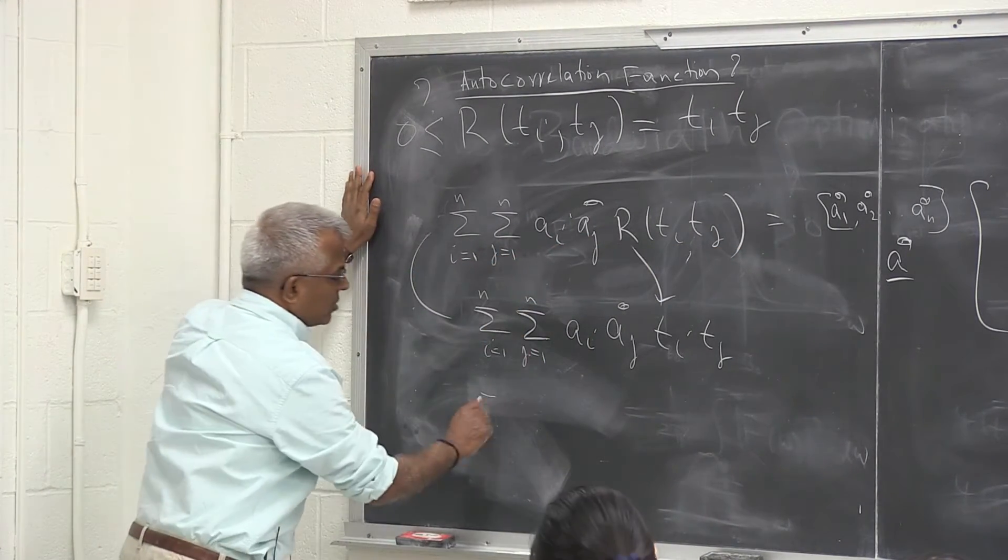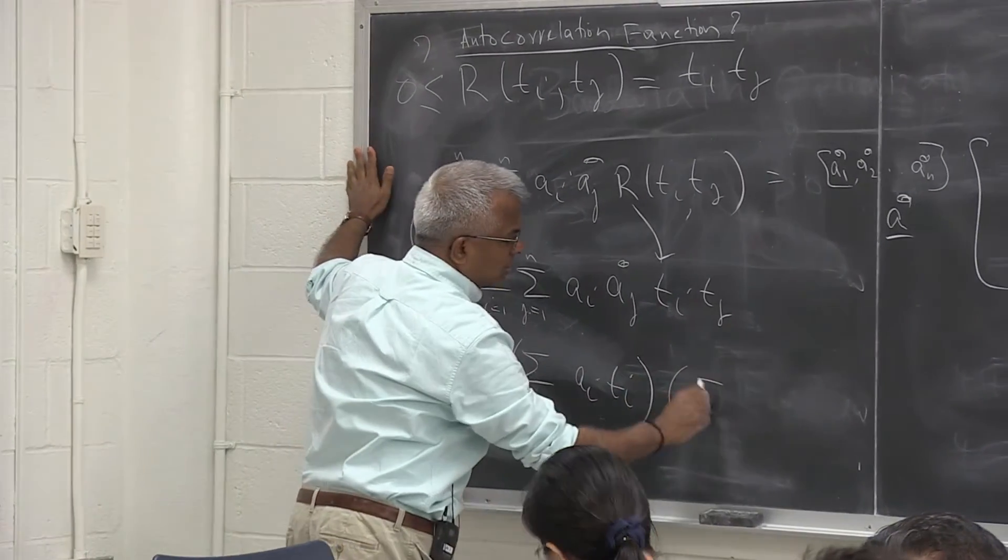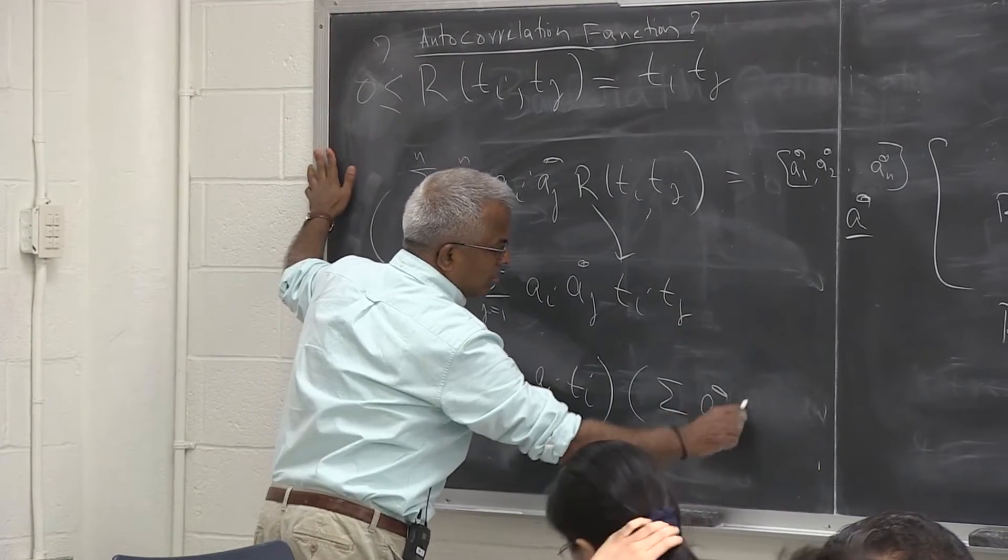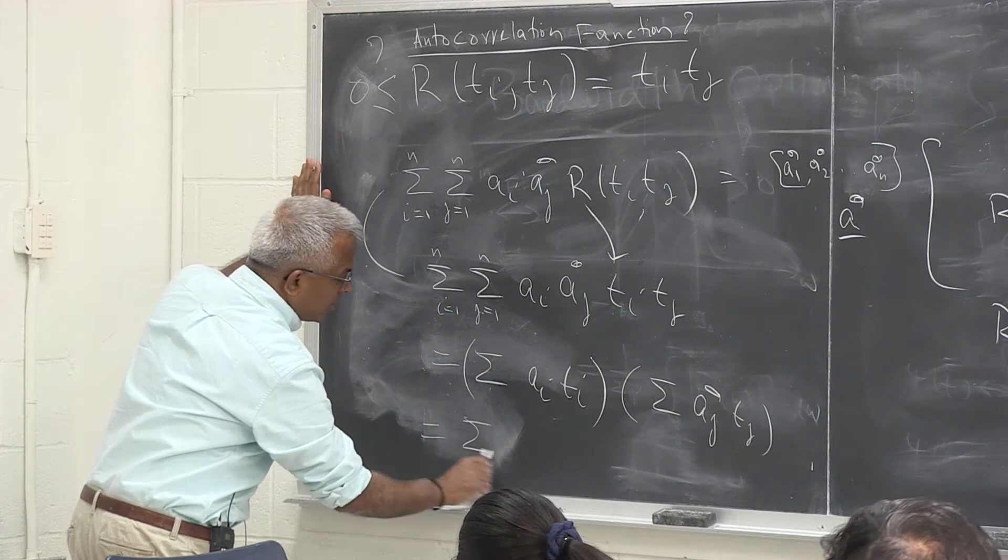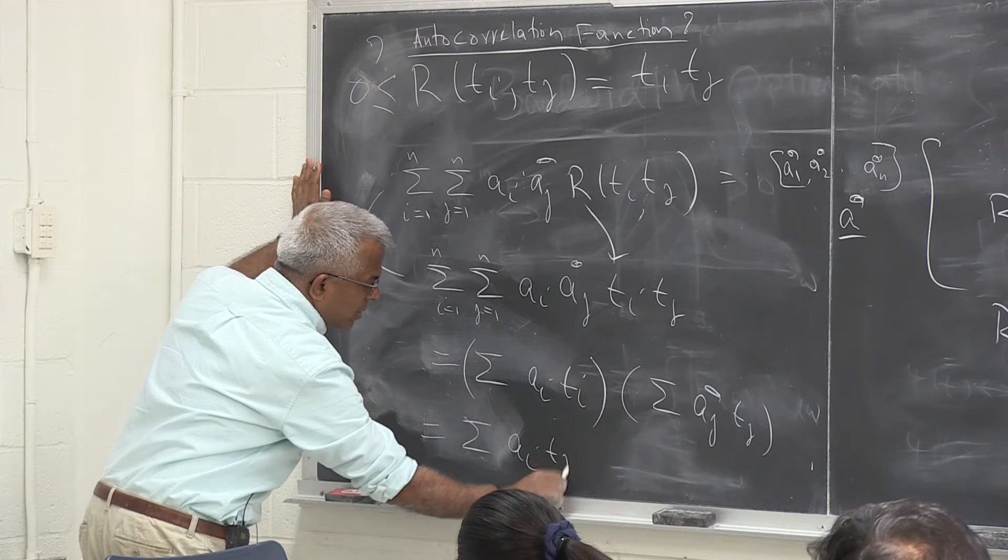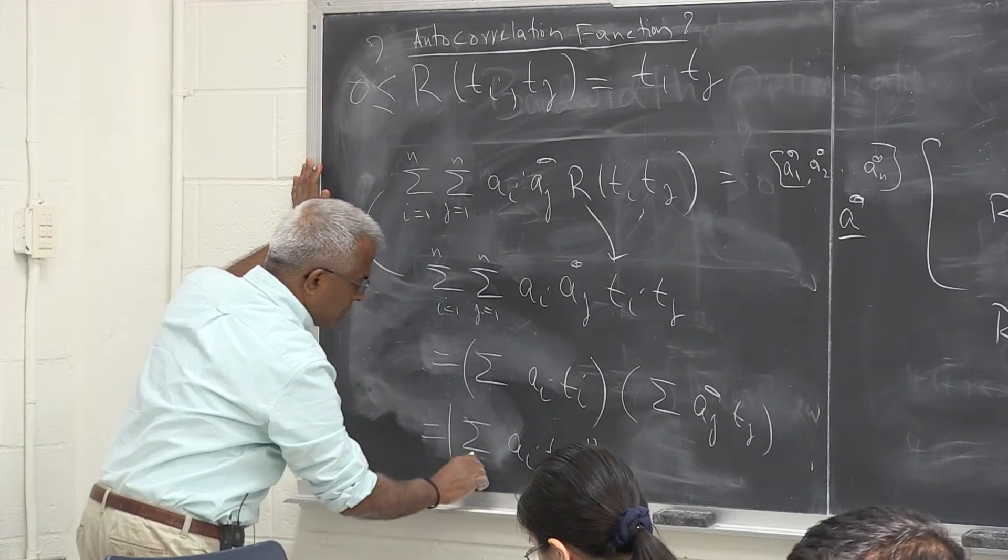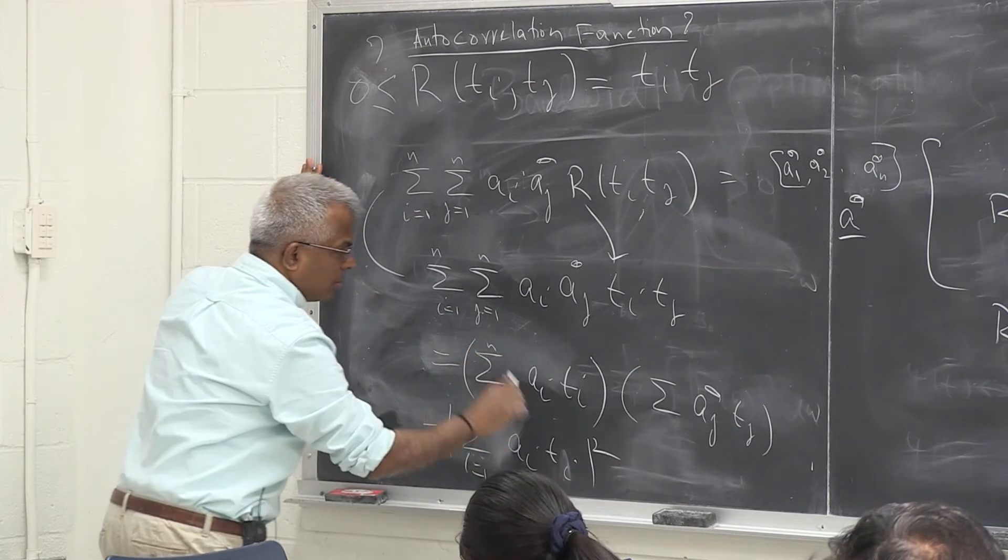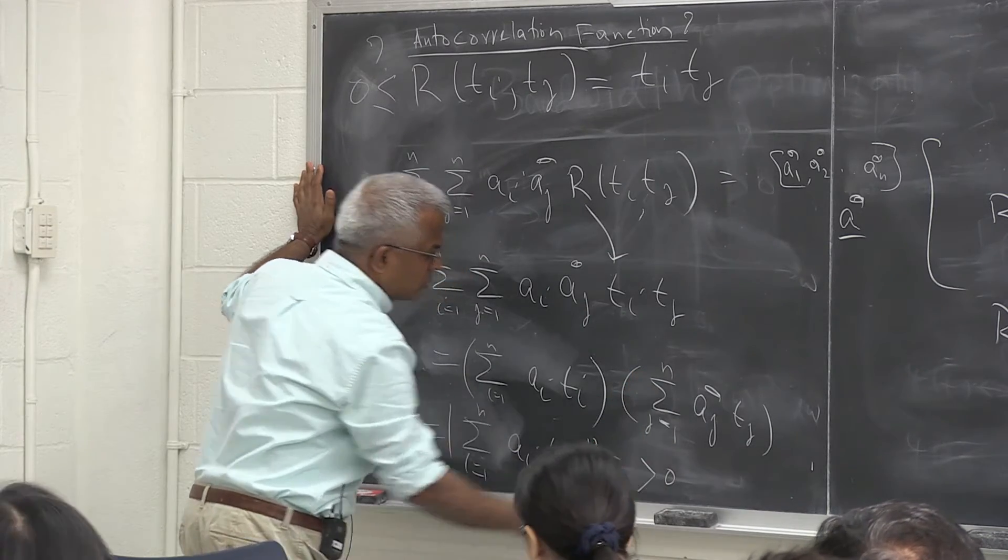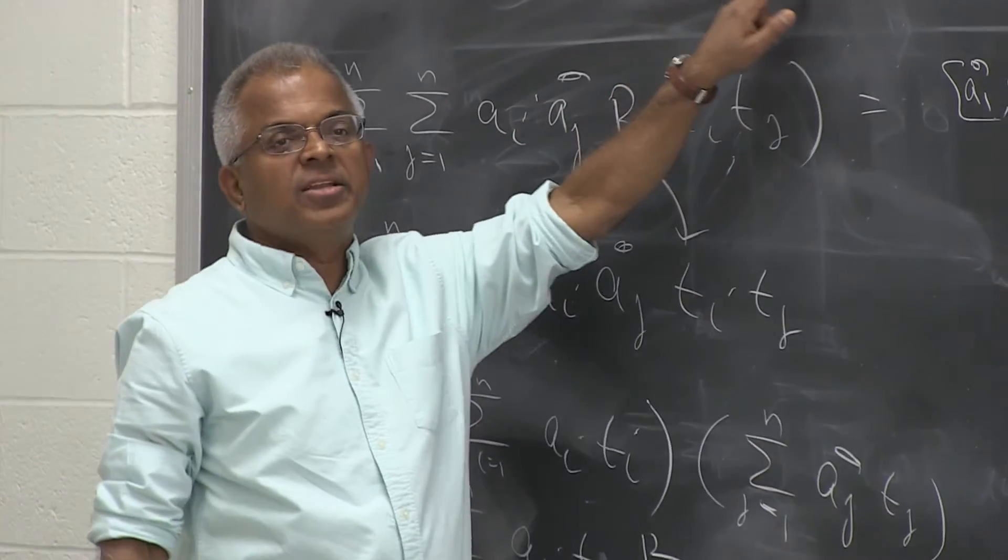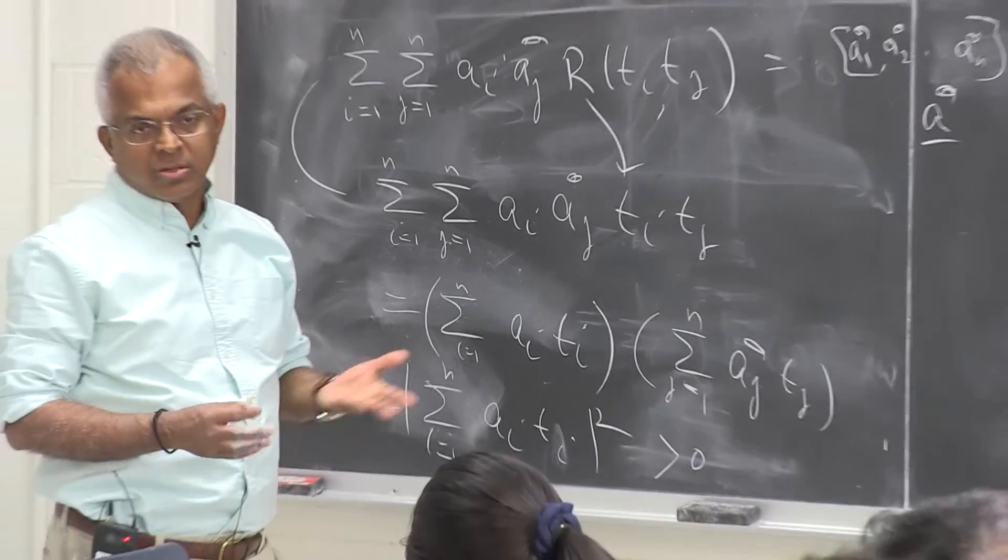That is this. But do you see this? So that's this. Because the variables split here. So of course, I can write this as a_i, t_i. So this is what I wanted you to do. So of course, this is positive. So consequently, now I can say that t_i, t_j is an autocorrelation function, but it is not wide-sense stationary.